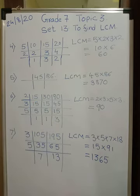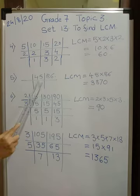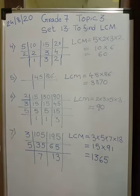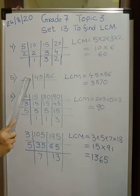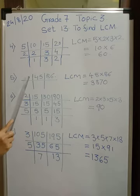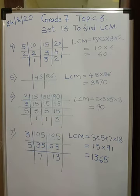Now the 5th problem — very interesting: 45 and 86. There is not a single number dividing both of these numbers. In case of HCF, when no number divides both, the HCF is 1. In case of LCM, when no number divides both, the LCM is the product of both numbers. Therefore, LCM = 45 × 86 = 3870.